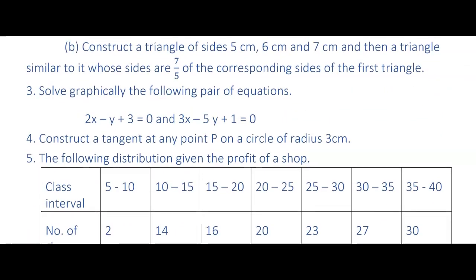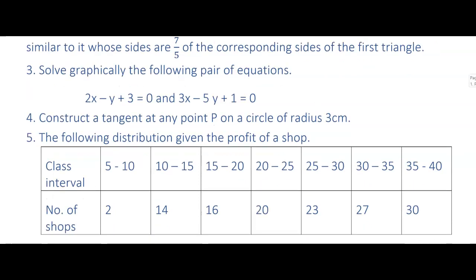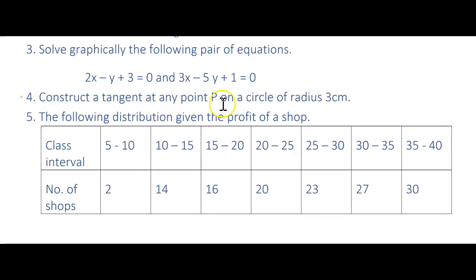Solve graphically the following pair of linear equations 2x - y + 3 = 0 and 3x - 5y + 1 = 0. How to solve these equations I have made the video. You can watch in my playlist, class 10 graph. Next, construct a tangent at any point P on a circle of radius 3 centimeter. This is one or two mark question. After solving these all questions, you can get corrected with your class teachers. You can show to your subject teacher and you can ask them to verify whether the answer you have got is correct or wrong.